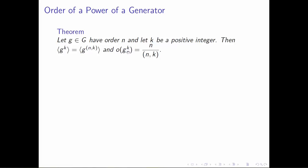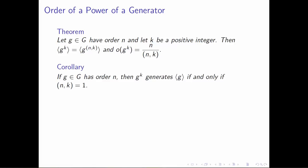A very useful corollary of this theorem is that g to the k is going to have the same order as g if and only if what we're dividing by is actually 1. In other words, if g is an element of the larger group with order n, then g to the k is also a generator for the group generated by g if and only if the integer k is relatively prime to the order of g—that is, if n and k are coprime.